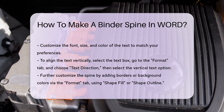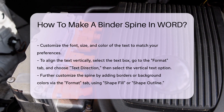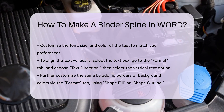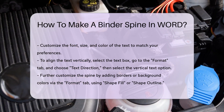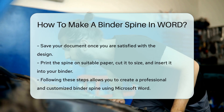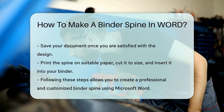You can further customize the spine by adding borders or background colors. To do this, select the text box, go to the Format tab, and choose Shape Fill or Shape Outline.